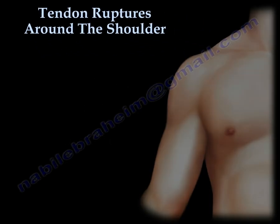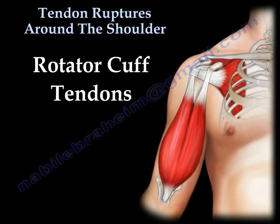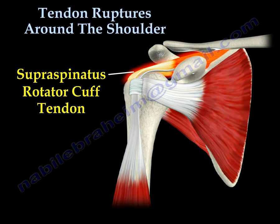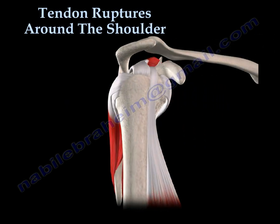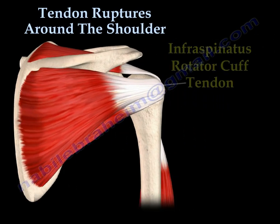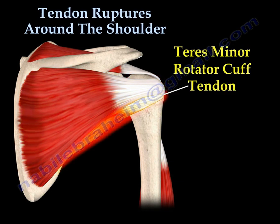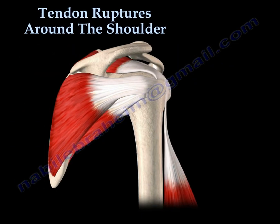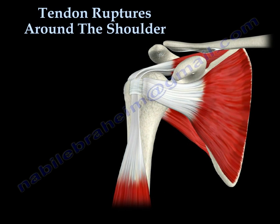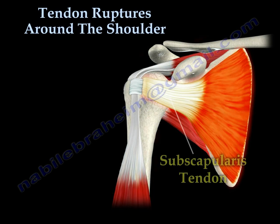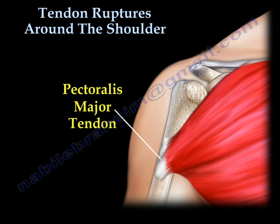Tendon ruptures around the shoulder. Rotator cuff tendons: here you can see the supraspinatus rotator cuff tendon, the infraspinatus rotator cuff tendon, the teres minor rotator cuff tendon, the biceps tendon, the subscapularis tendon, and the pectoralis major tendon.